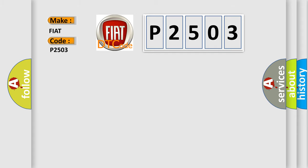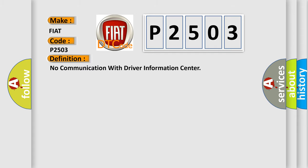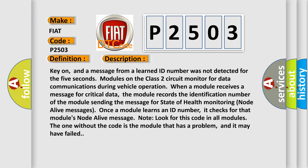The basic definition is: No communication with driver information center. Key on, and a message from a learned ID number was not detected for five seconds — modules on the Class 2 circuit monitor for data communications during vehicle operation. When a module receives a message for critical data, the module records the identification number of the module sending the message for state-of-health monitoring node alive messages. Once a module learns an ID number, it checks for that module's node alive message. Look for this code in all modules; the one without the code is the module that has a problem and may have failed.